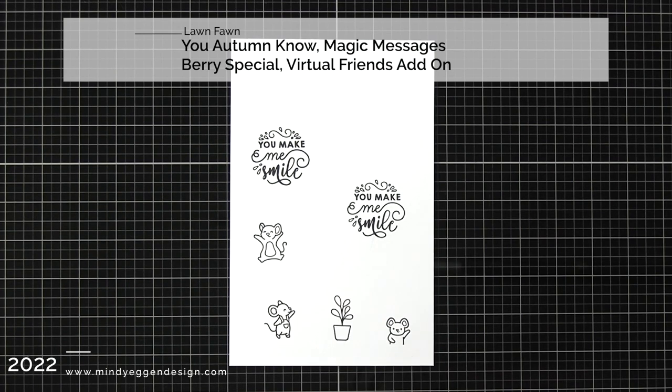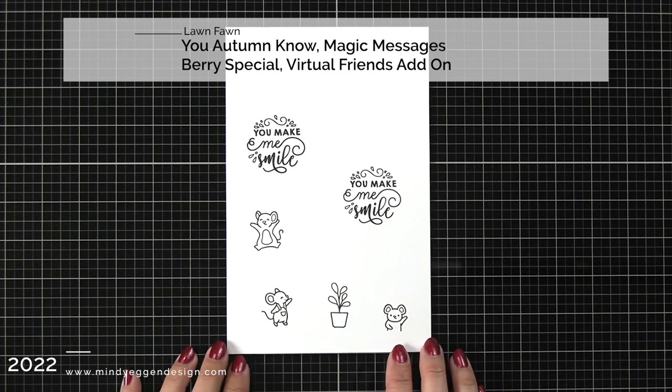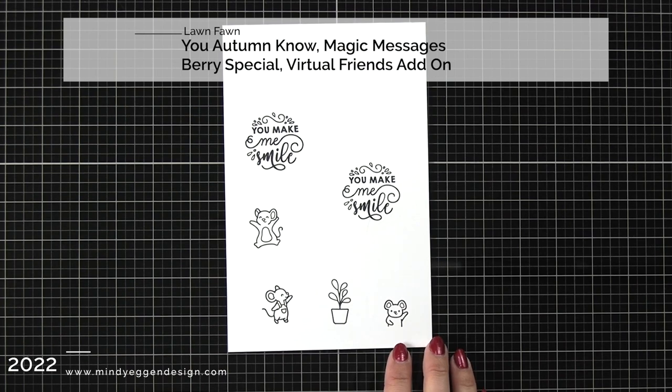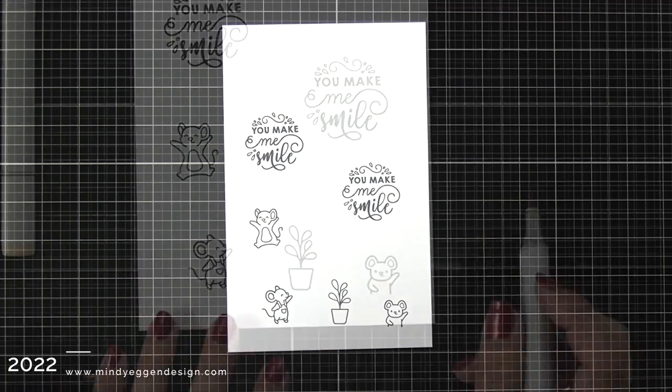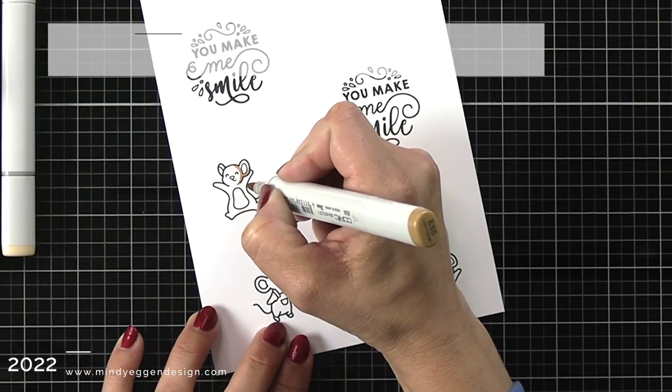I'm combining it with some previously released stamp sets including You Autumn Know, which is where that jumping mouse comes from, Magic Messages, Berry Special, which is the mouse in the overalls, and Virtual Friends and Virtual Friends add-on, which is where that plant and that small waving mouse comes from.